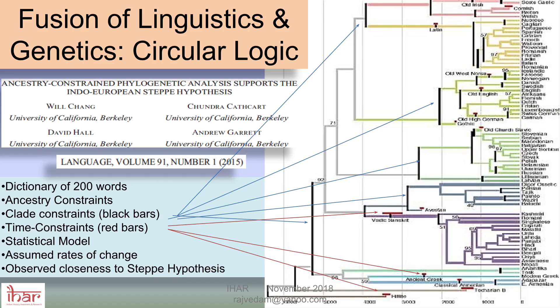To close out this section, I would like to give you one example that talks about circular logic. This is from a paper in 2015 from UC Berkeley on language. These people went about to fuse linguistics and genetics. They wanted to say: let's apply our known knowledge of linguistics and known knowledge of genetics and see whether some of our models are fitting, including the invasion hypothesis and all these kinds of things.